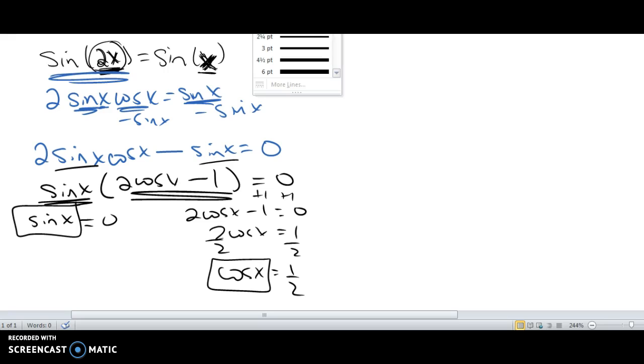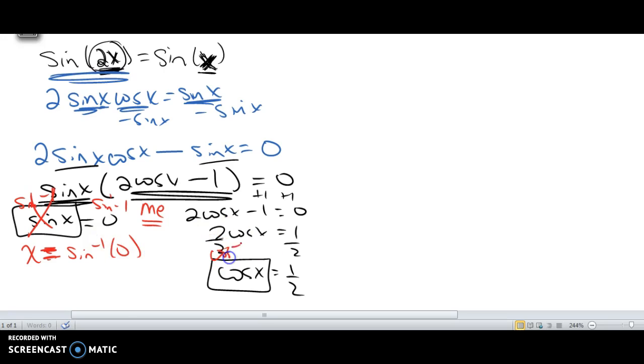In both cases I have the function isolated equal to the number. At this point I'm going to do the inverse sine to this guy. Remember, I'm choosing to do this, so I'm not limited by any domain rules. Then same thing over here, except it's the inverse cosine.